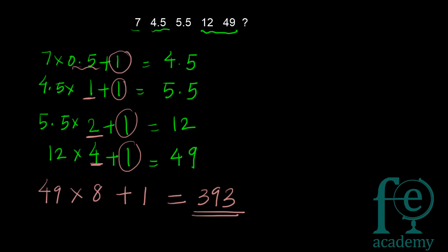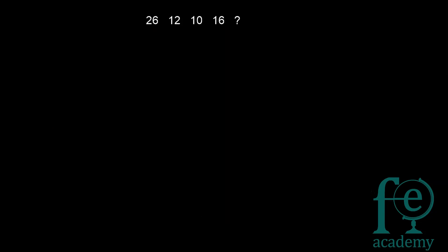The next multiplicand is 4 × 2 = 8, so the answer is 49 × 8 + 1 = 392 + 1 = 393. To summarize: the inference is that the multiplicand is less than 1, leading to the choice of 0.5. The constant addend is always 1, while the multiplicands 0.5, 1, 2, 4, 8 double each step. So 49 × 8 + 1 = 393 is the answer.